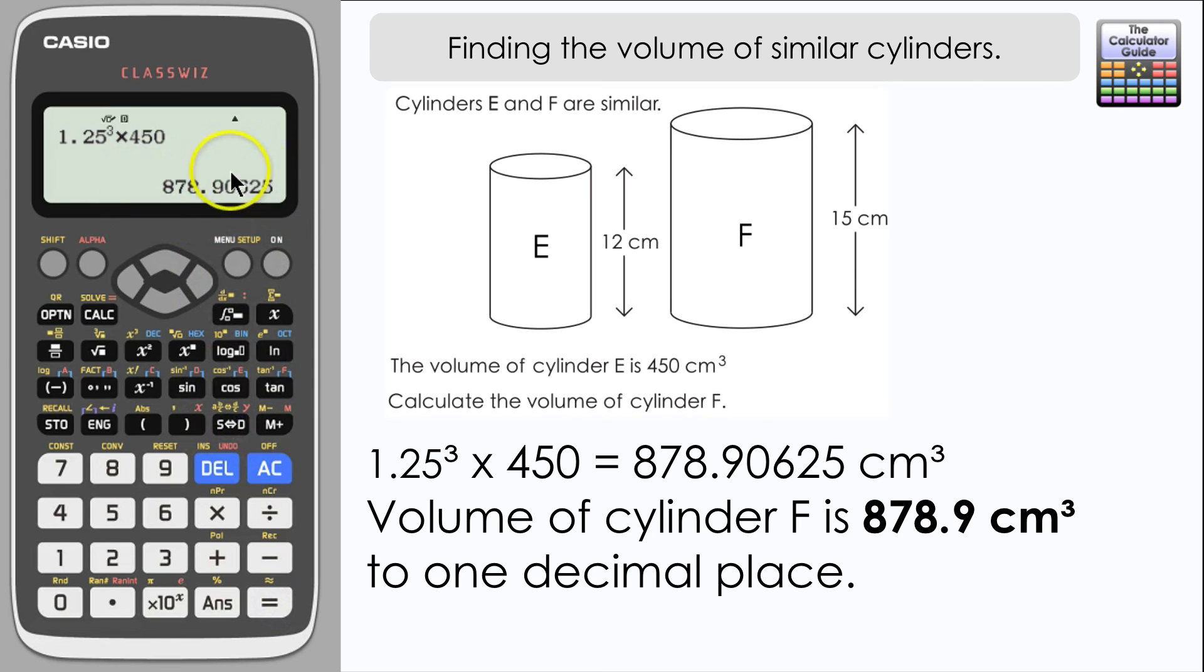And here we have our answer. I'm going to round that to one decimal place. 878.9 centimeters cubed for the volume of cylinder F.